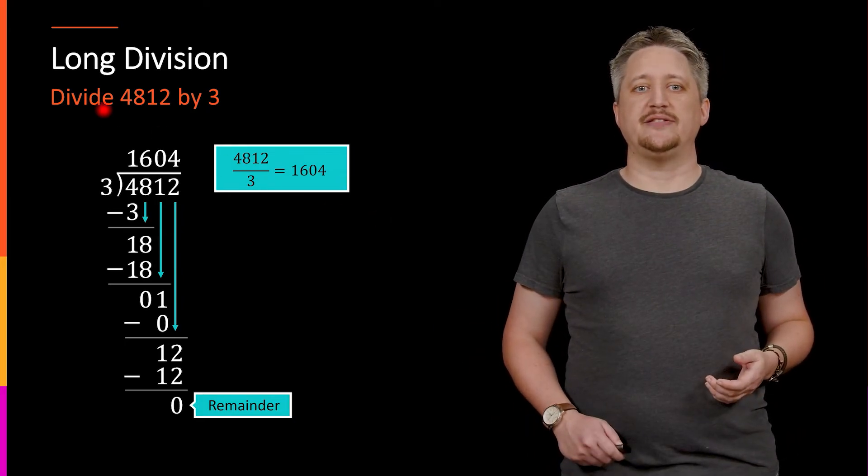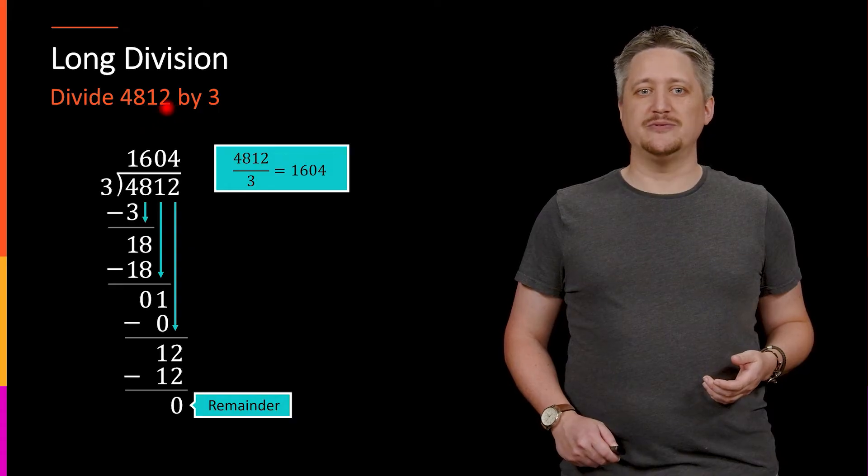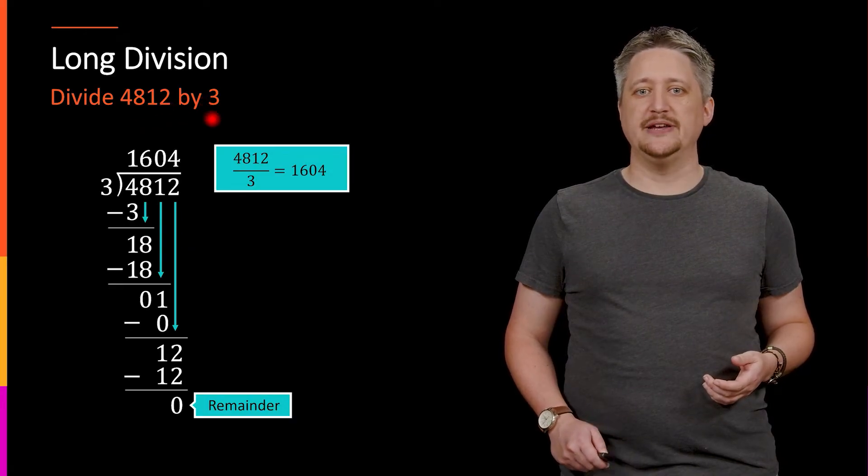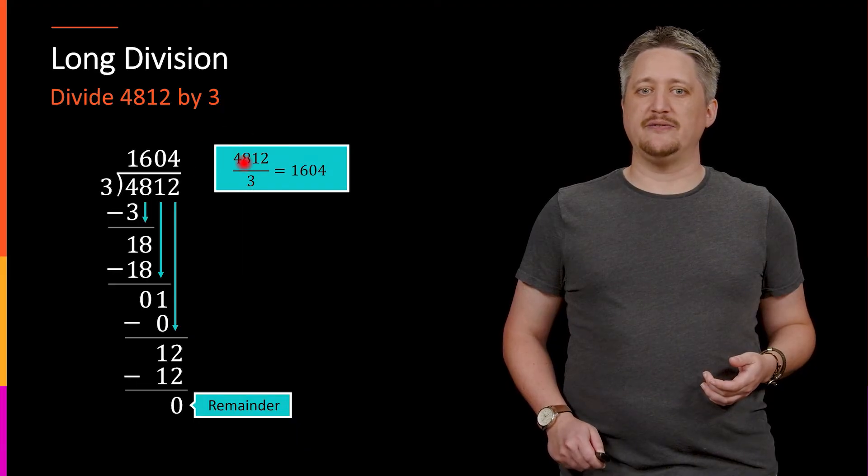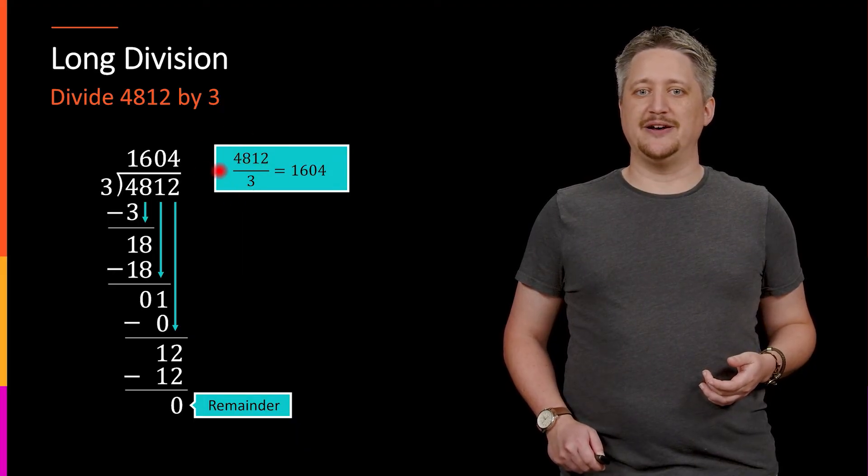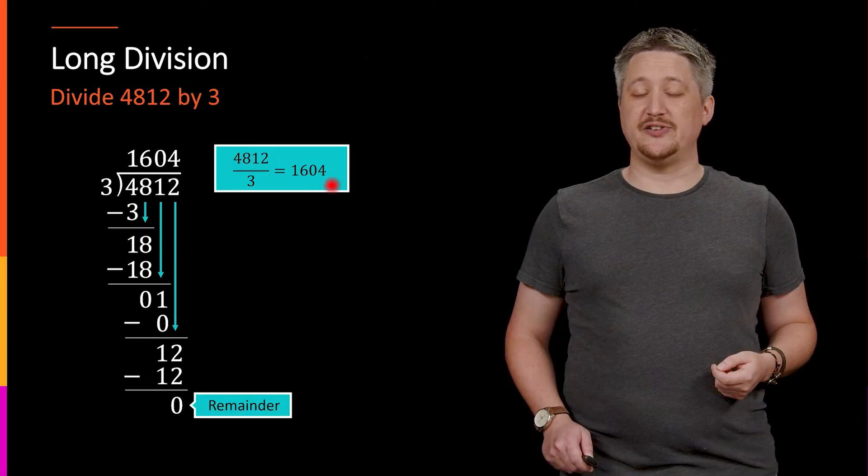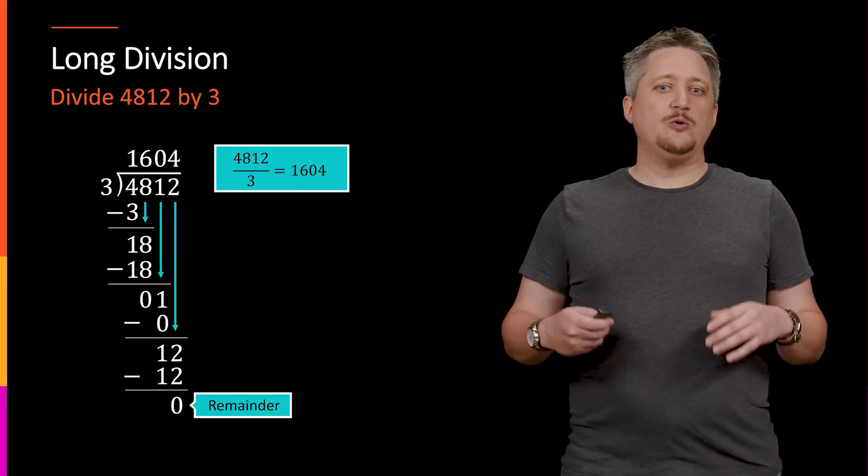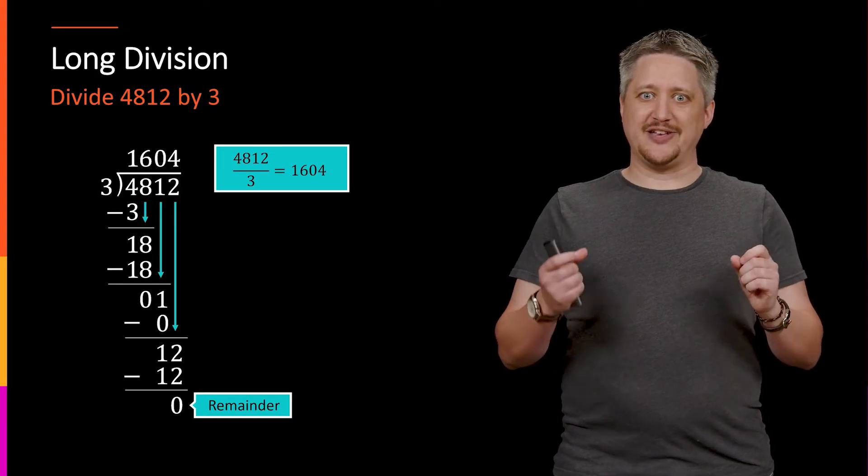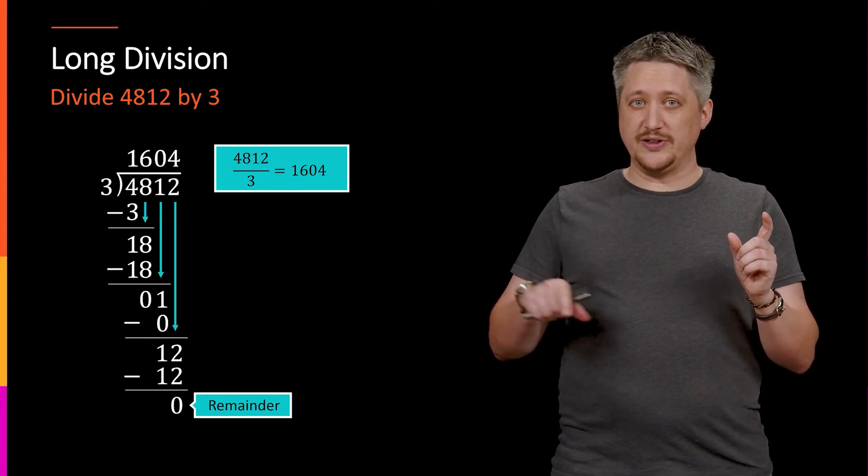but we could write it as this fraction. 4812 divided by bar 3 equals 1604. This is usually what we're doing when we're doing numbers. We could rewrite this, though, by thinking about this as an equality and moving the 3 over, meaning multiplying both sides by 3,